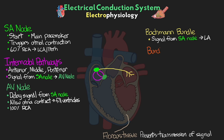Next is something called the bundle of His. This is another set of high-speed transmission cells that comes off the AV node. It travels partially in the wall of the right atrium and then into the interventricular septum before it branches to the left and right ventricles. In physiologically normal individuals, this is the only route of communication that exists between the atria and the ventricles.